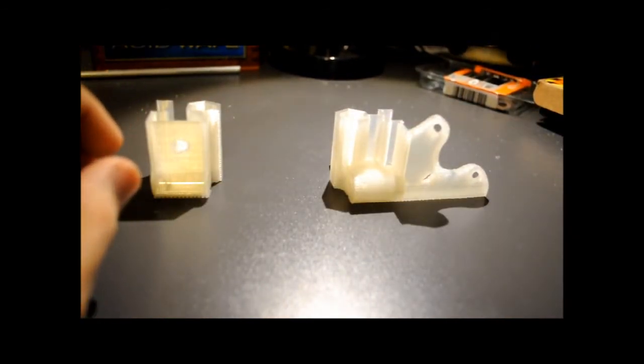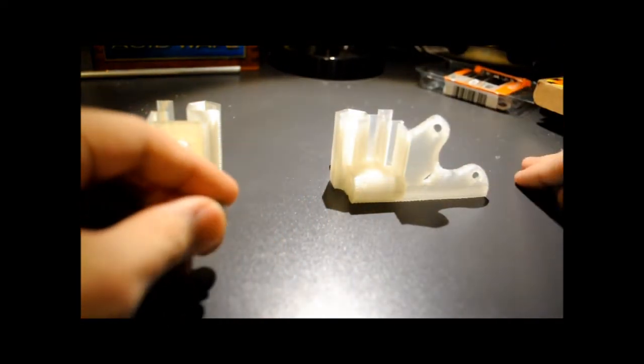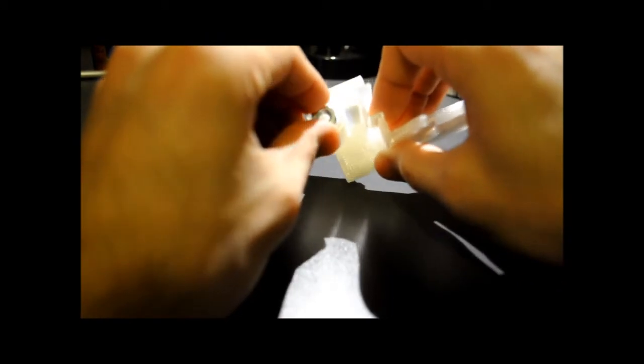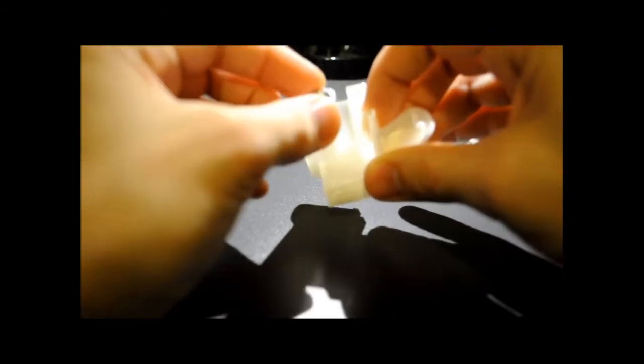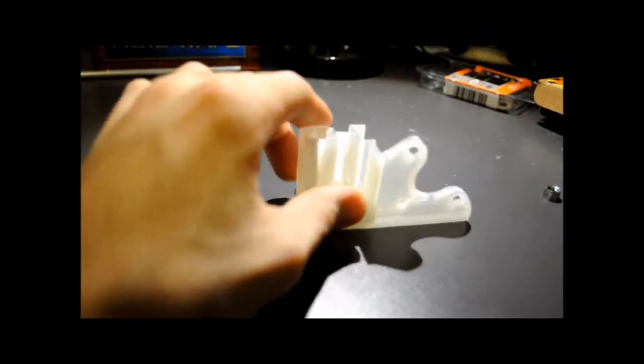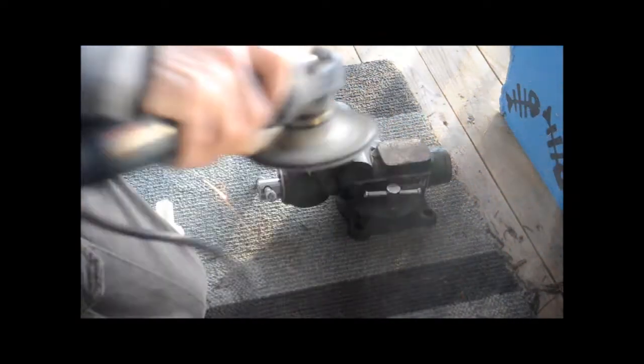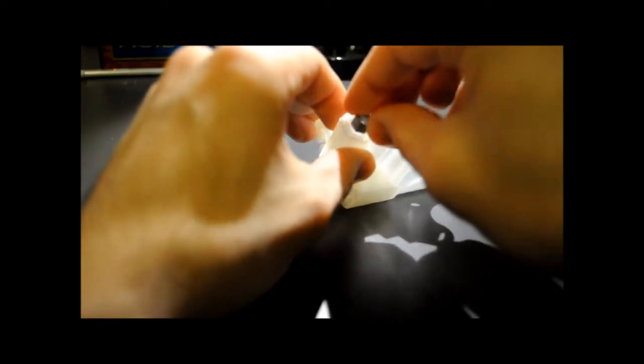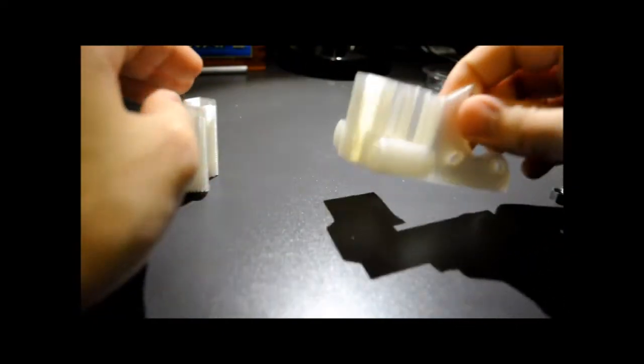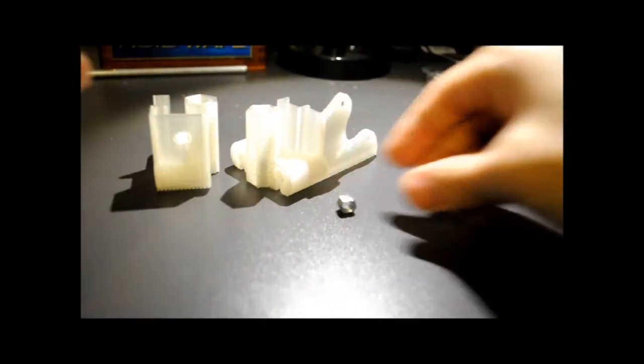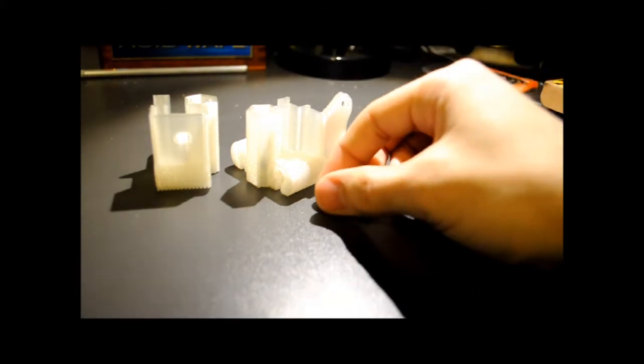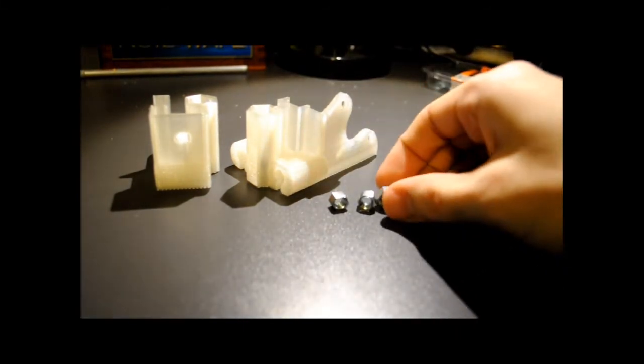One thing I have that's kind of an issue is these pieces right here are supposed to hold the nuts so the threaded rod can ride onto it, but my nuts are too big. So I had to grind them down so I can actually get the nut inside the piece. I have like three nuts all grinded down from this normal sized nut.